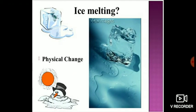Another example, which we have just discussed: melting of ice, or melting of ice cream, or melting of chocolate. All of these are considered as physical changes. Why? Because there is only a change in state — only a solid substance is changing into liquid, but there is no new substance formation.